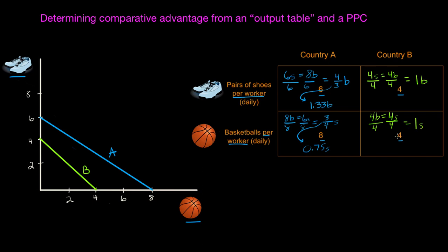Now I have all the information I need to determine who has the comparative advantage in these two goods, and with that information I know how the countries can specialize and trade in a way that benefits both mutually. Let's first look at shoes. Country A can produce shoes at an opportunity cost of 1.33 basketballs per shoe, and country B can produce shoes at an opportunity cost of one basketball per pair of shoes.